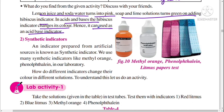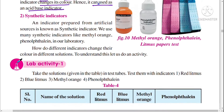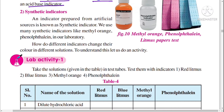Synthetic indicators means an indicator prepared from an artificial source is known as a synthetic indicator. We use many synthetic indicators like methyl orange, phenolphthalein, and litmus for test purposes in the laboratory.